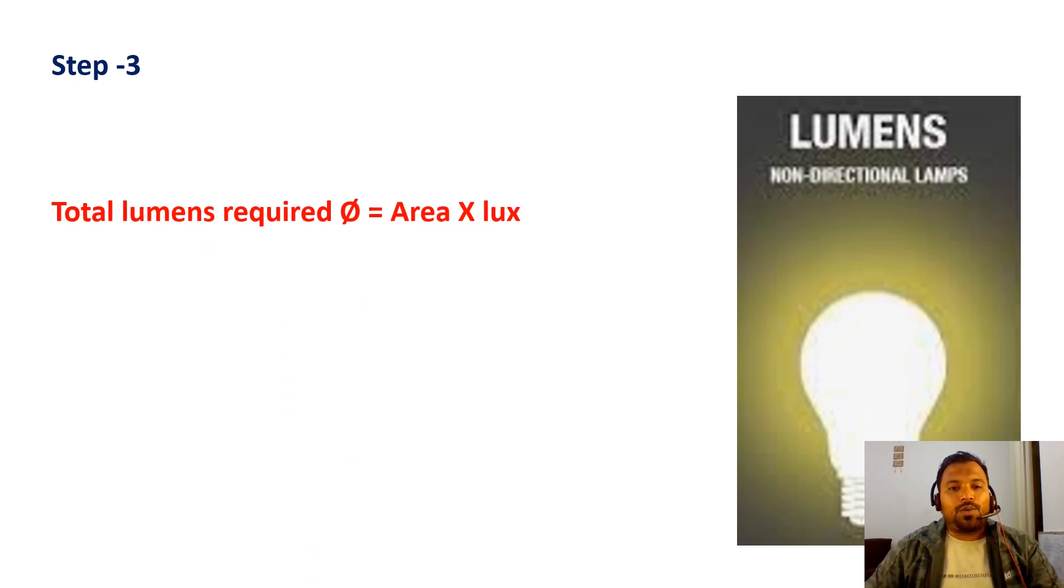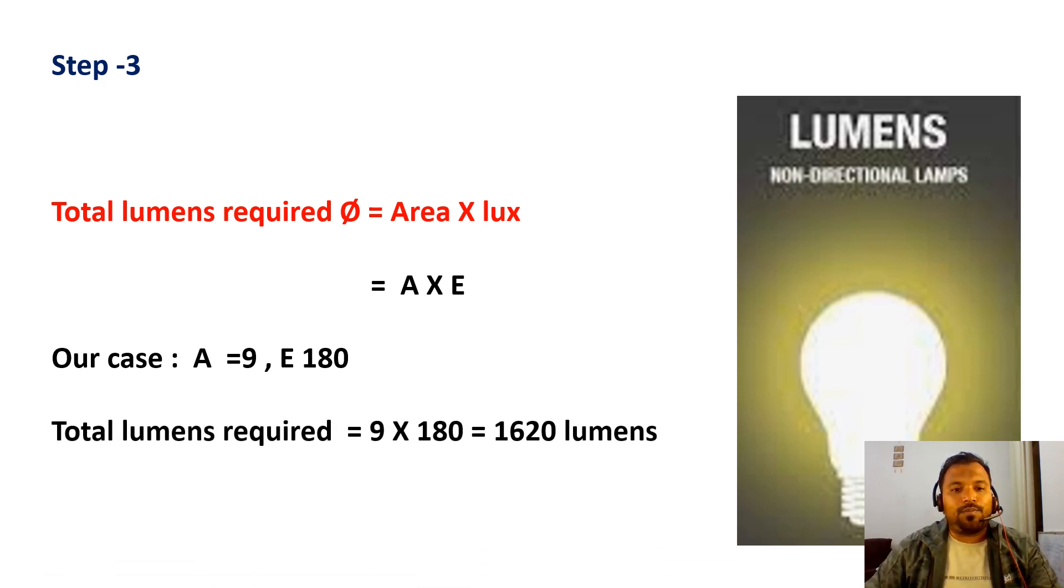Step 3 is to calculate the total lumens required, which is the luminous flux - meaning how much illumination the light is emitting. The formula is total lumens required equals area (A) times lux value (E). In our case, A equals 9 and E equals 180. Substituting these values in the formula: 9 into 180 equals 1620 lumens required for the 3 by 3 bedroom.